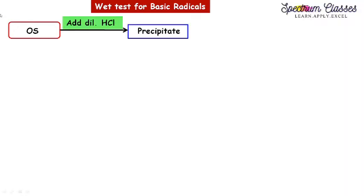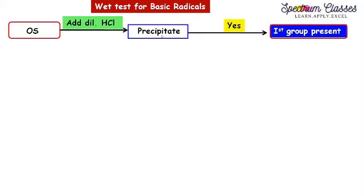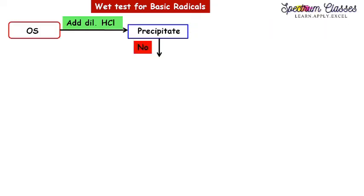Now I am showing you the wet test for basic radicals using this original solution. For acidic radicals we prepared the water extract and sodium carbonate extract, but for basic radicals we prepare the original solution. To this original solution, if prepared in water, we add dilute HCl — which is the group reagent for group 1. If you get a precipitate then it suggests group 1 is present; if no precipitate is observed, group 1 is absent.